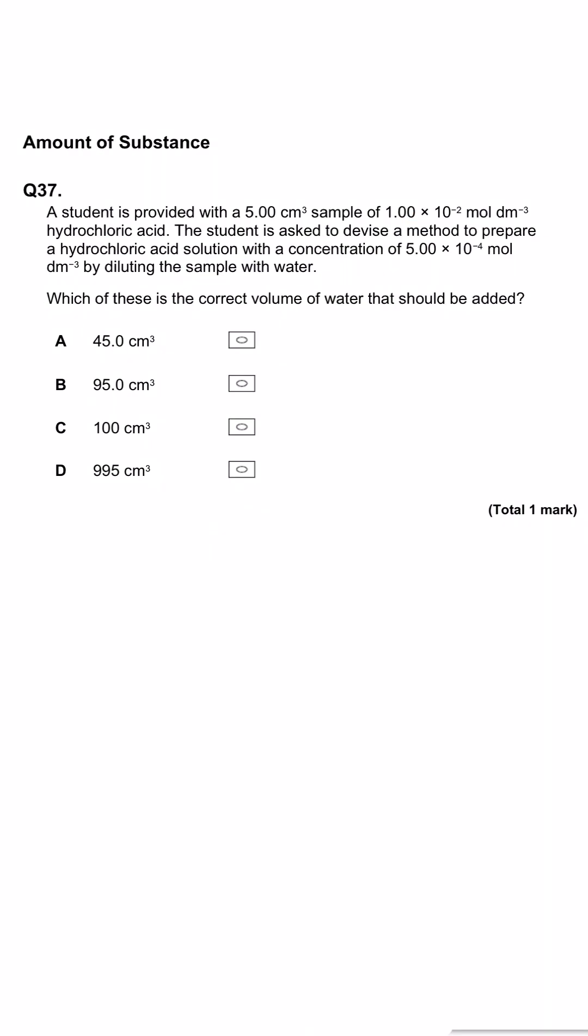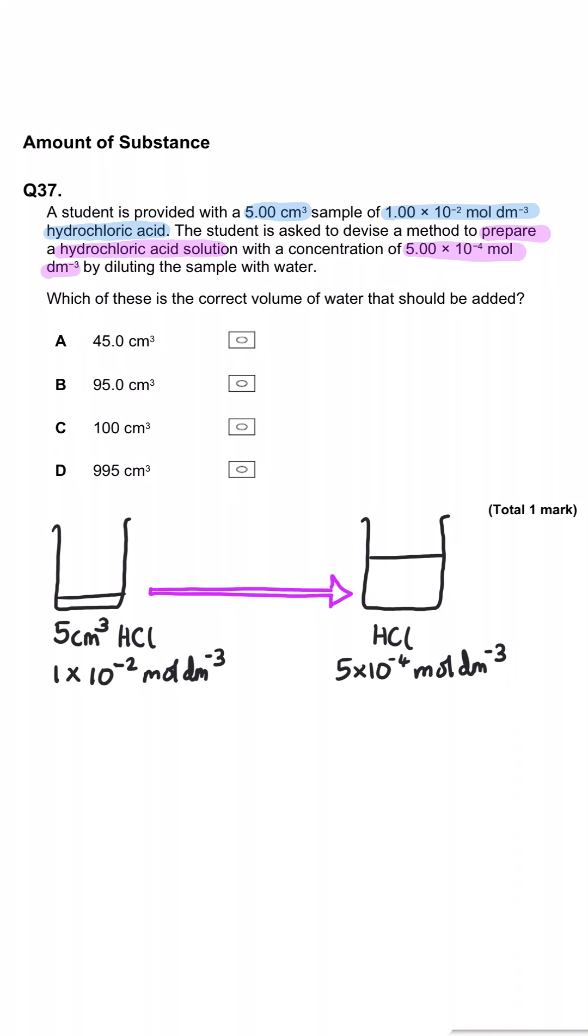A student is provided with 5 cm cubed of a sample of hydrochloric acid with a concentration of 1 times 10 to the minus 2 moles per decimetre cubed. They are asked to devise a method to prepare a hydrochloric acid solution with a concentration of 5 times 10 to the minus 4 moles per decimetre cubed by diluting the sample with water. Which of these is the correct volume of water that should be added?